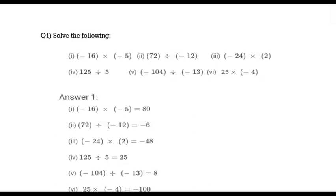Question number 1 — solve the following. First: negative 16 multiplied by negative 5. The answer will be positive 80, because negative multiplied by negative gives positive. Second: 72 divided by negative 12. Since the negative sign is in the denominator, it will be given to the numerator in the answer. By dividing, we get 6, so the final answer is negative 6.